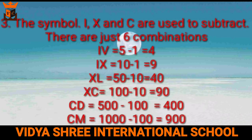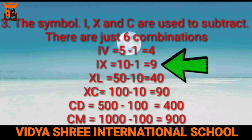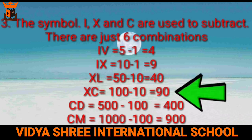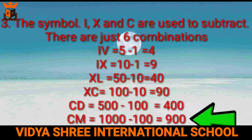Remember this point: I, X, and C are used to subtract, and there are just 6 combinations. IV equals 5 minus 1, which is 4. IX equals 10 minus 1, which is 9. XL equals 50 minus 10, which is 40. XC equals 100 minus 10, which is 90. CD equals 500 minus 100, which is 400. CM equals 1000 minus 100, which is 900.